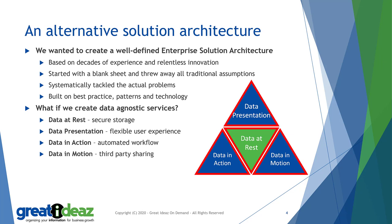We have a data at rest service area that is only dealing with secure storage of information. This could be record data, file data, emails — essentially where data is at rest, it's placed in secure storage. That secure storage is at the heart of the system and is protected. The peripheral service areas, shown in blue in the diagram, are then exposing the data that we're protecting. Either we are presenting data to users through a user experience, we are providing automated workflow through our data in action services, or we are sharing information with third parties — either internally or externally — in our data in motion service area.